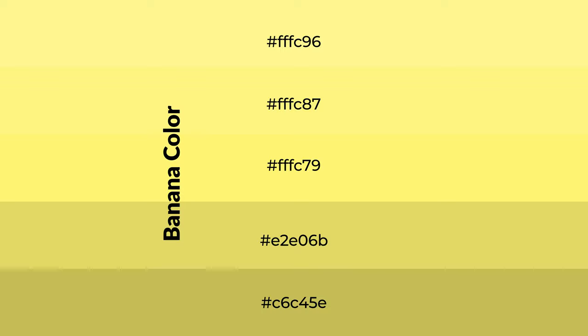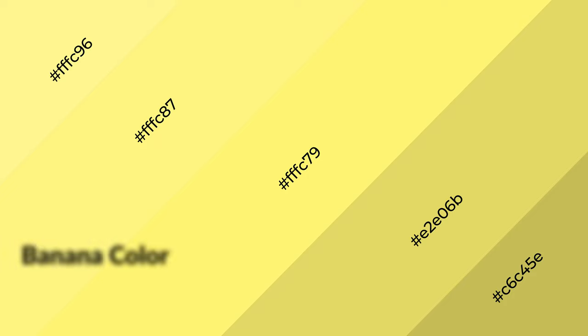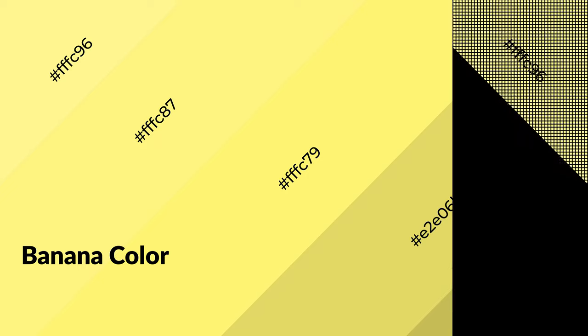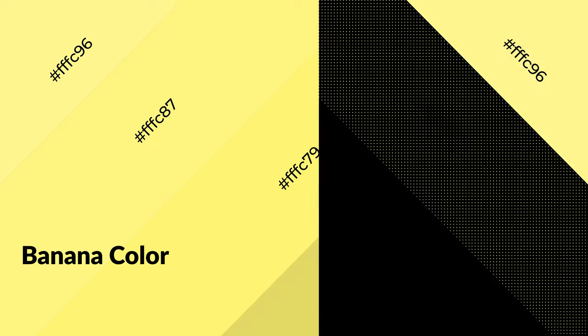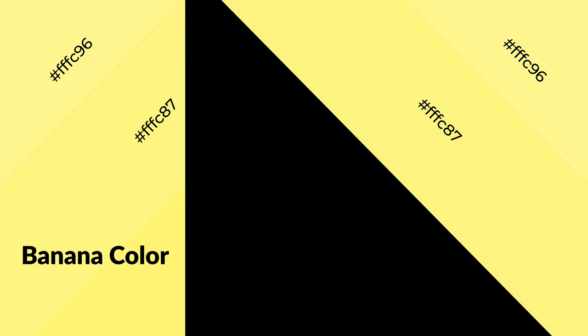To generate shades of a color, we add black to the color. Shades are used in patterns, 3D effects, and layers — they create depth and drama. Banana is a warm color and it emits cozier and active emotions. Warm colors are symbols of warmth, fire, heat, and sunshine.